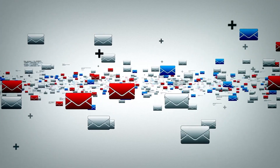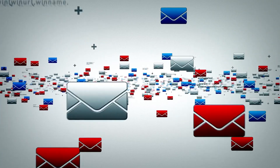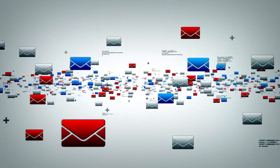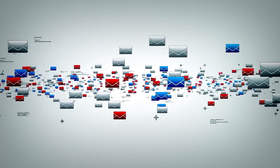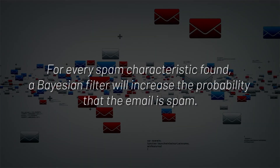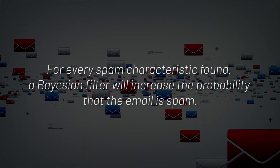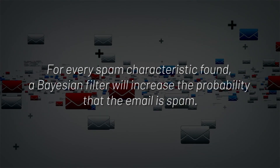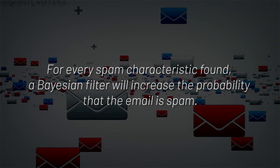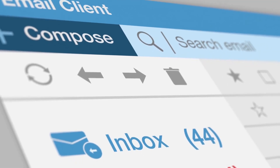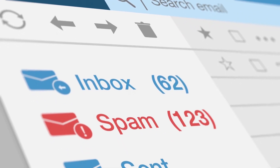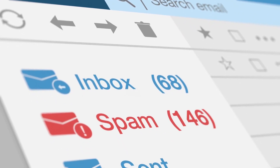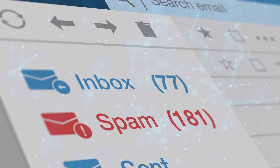A Bayesian filter is an email spam filter. It looks for certain characteristics in emails and uses them to calculate the probability of that email being spam. For every spam characteristic found, a Bayesian filter will increase the probability that the email is spam. If the filter eventually estimates that the email has a 99% or higher probability of being spam, into the spam folder it goes.